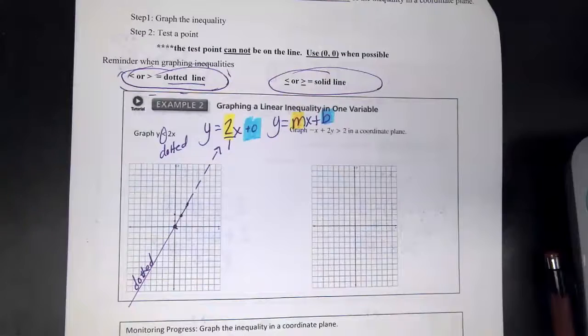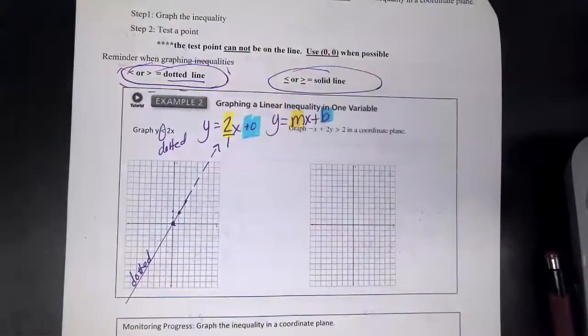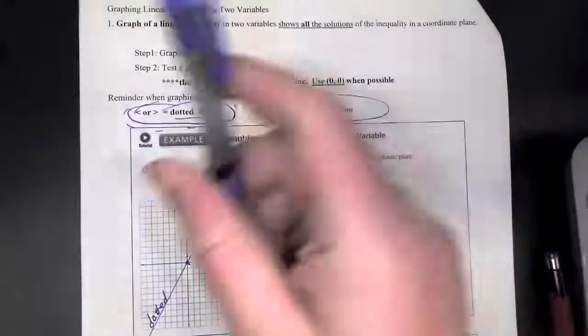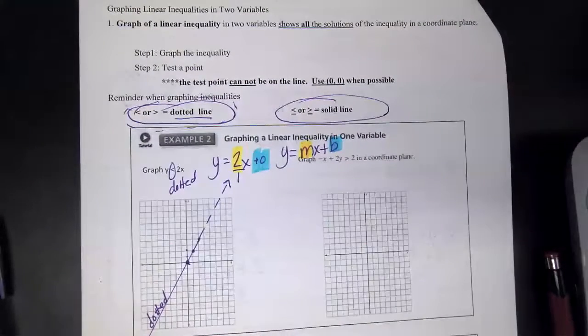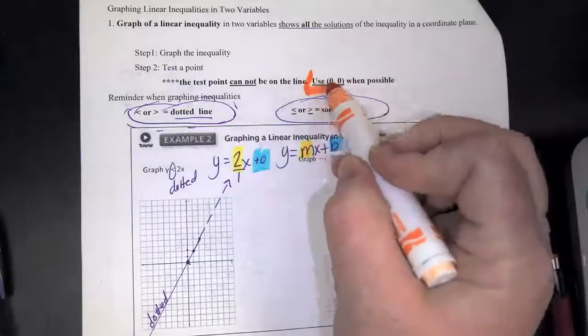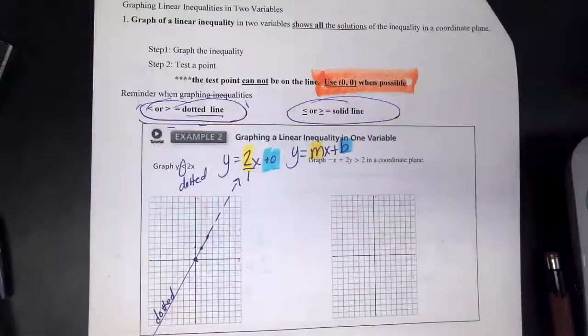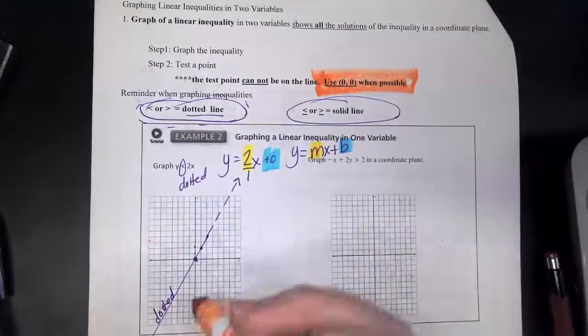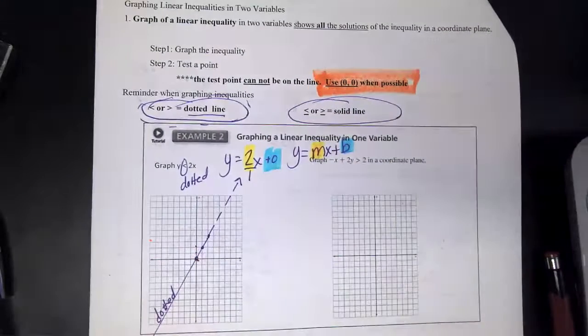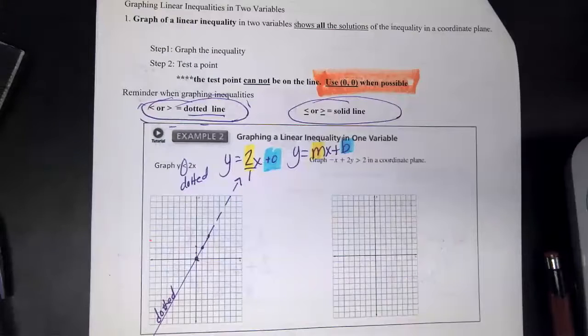Okay, two things on the top. If you are greater than or less than, we're going to make that line a dotted line. Okay. If we are, I should have made that a dotted line, right? If you are less than or equal to or greater than or equal to, it is a solid line. Okay, so first of all, let's see. All right, dotted or solid. I am dotted.